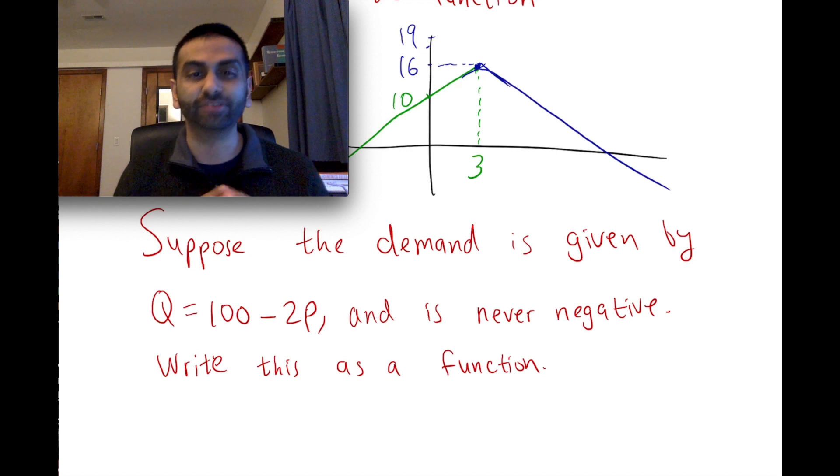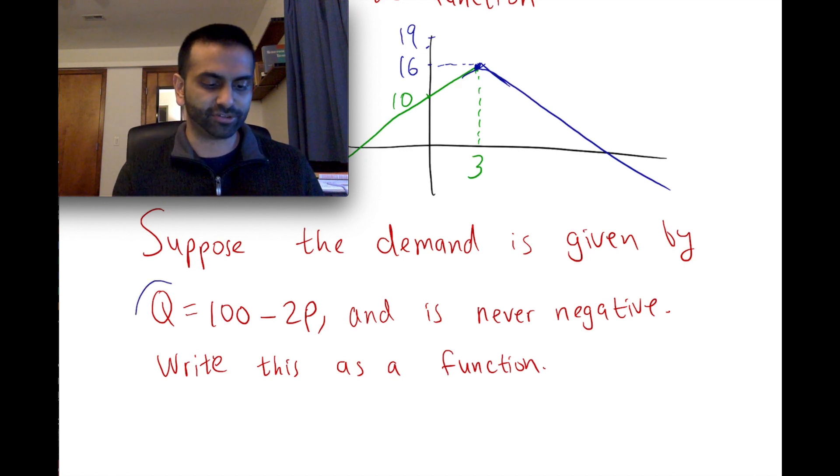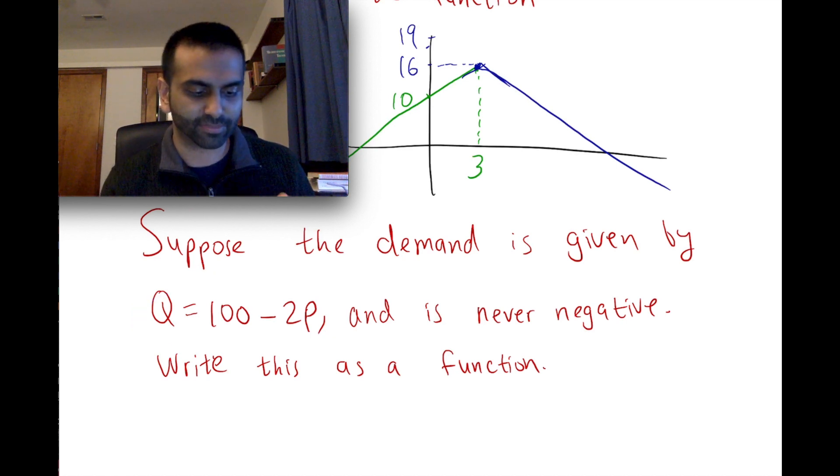Let's say this question says, suppose that the demand is given by this expression. So that's like quantity and price and if the price is $10, then 10 times 2 is 20. So 100 minus 20 is 80. So the quantity is 80. So that's like the demand.